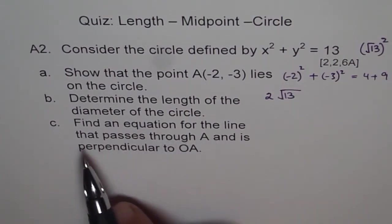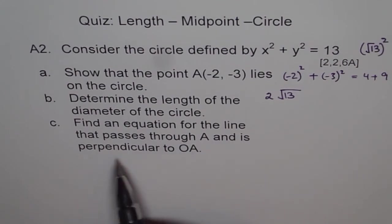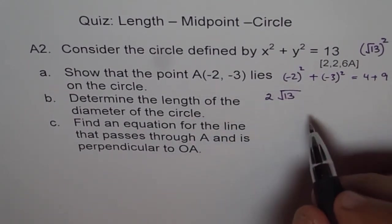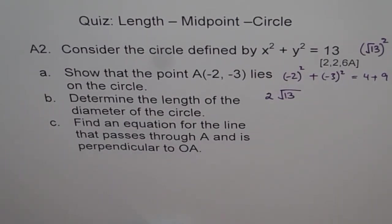Find an equation for the line that passed through A, which is this point, and is perpendicular to OA. O is the origin. So basically, what we have here is, let's try to understand the situation.